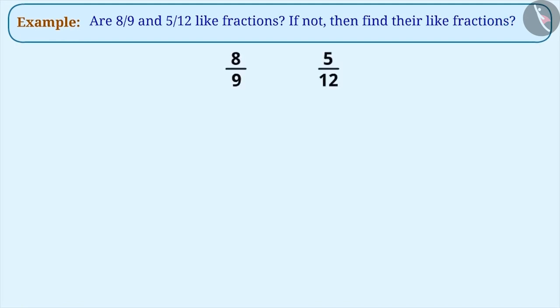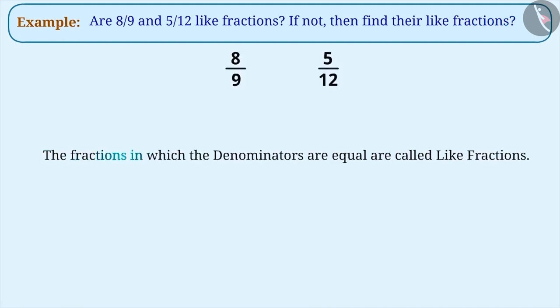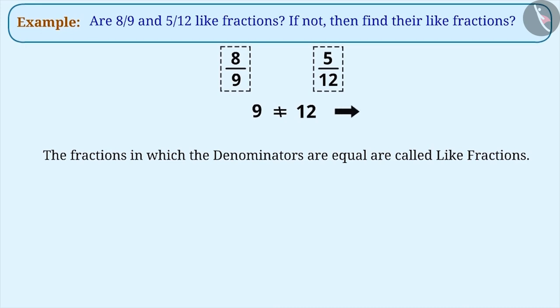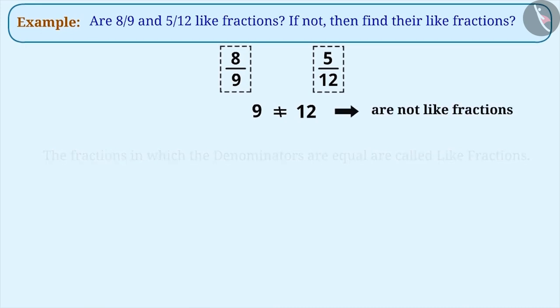We call any two fractions as like fractions only when their denominators are equal. Here, eight by nine and five by twelve do not have equal denominators, so they are not like fractions.